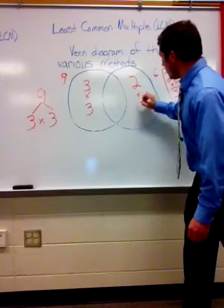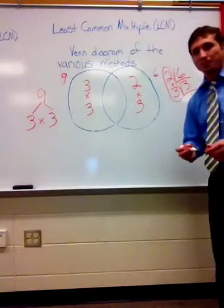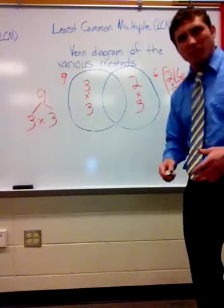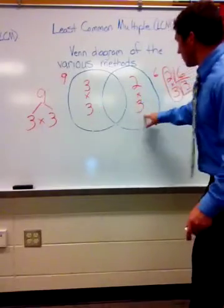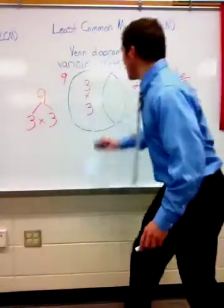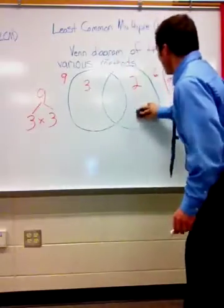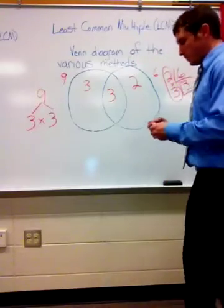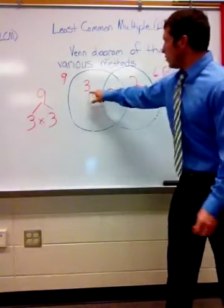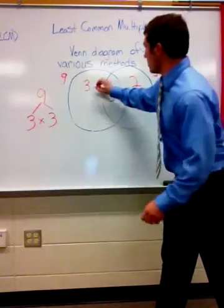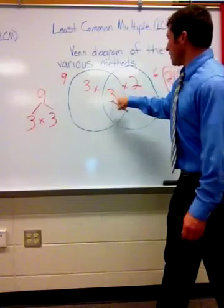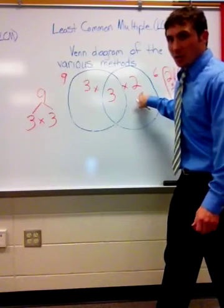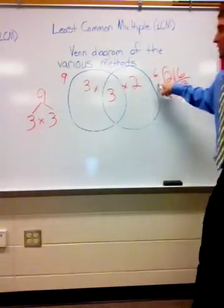Write 2 and 3 on this side of your Venn diagram. Now we ask: are there any numbers that are common? Yes — we have a 3 here and a 3 here, so we erase the common one and place it in the center of the Venn diagram because they share that number as a factor. Now we take the remaining numbers and multiply them together: 3 times 3 is 9, times 2 is 18. The least common multiple of 9 and 6 is 18.